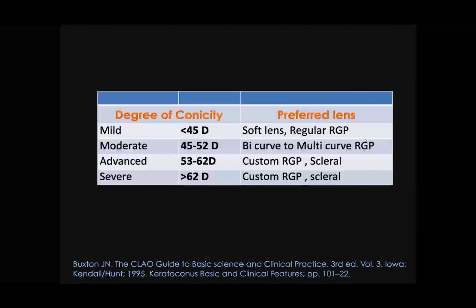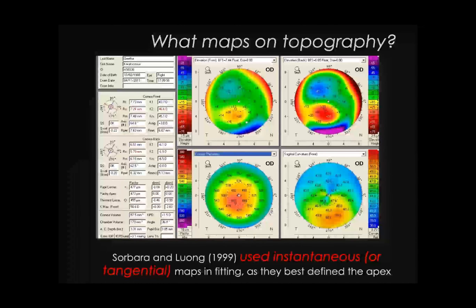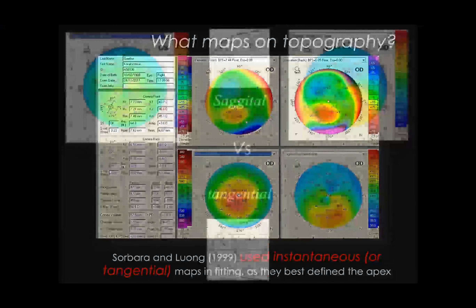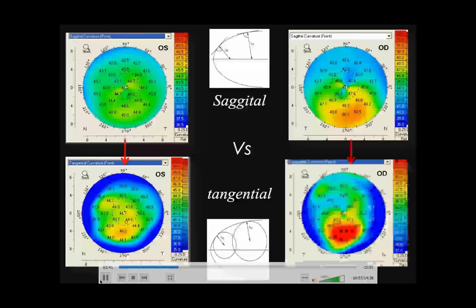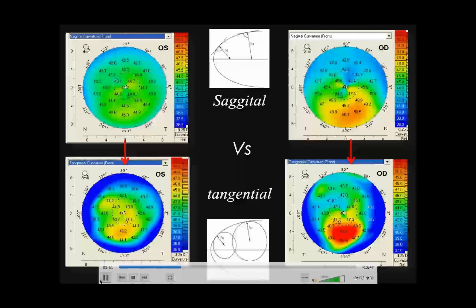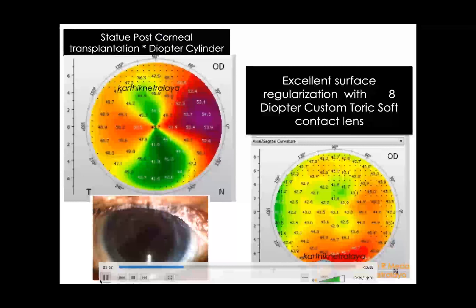On the Pentacam, always look at the tangential curvature map — cones are more obvious on tangential than sagittal maps — before starting the first contact lens. Soft lenses also have a role today. For example, a post-transplant patient with 8 diopters of astigmatism achieved a dramatically improved topography with a customized soft contact lens, particularly useful for central cones with symmetric appearance.